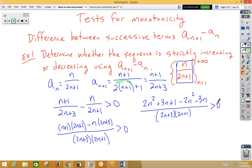So now if we combine like terms, the 2n squareds cancel out, the 3n's cancel out, leaving us with a positive 1 on the top and a 2n plus 3 times 2n plus 1 on the bottom.